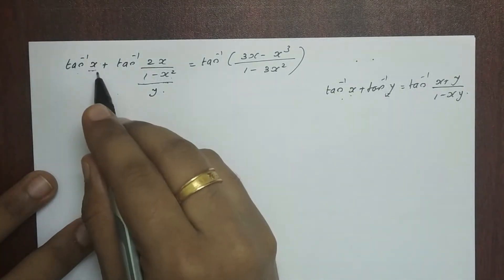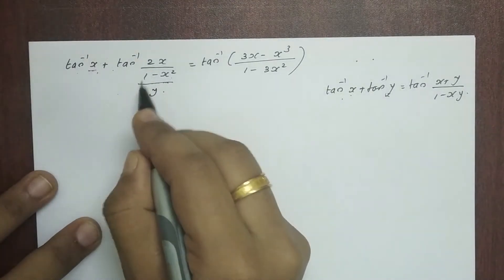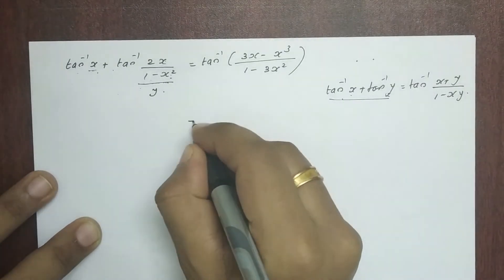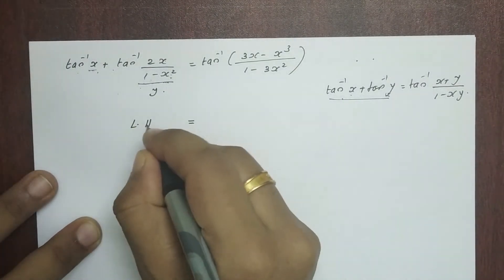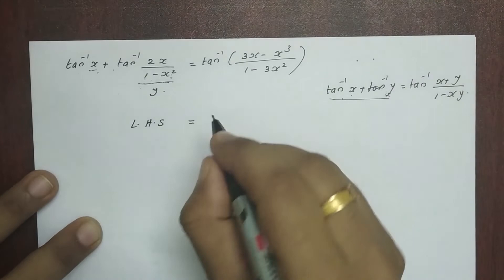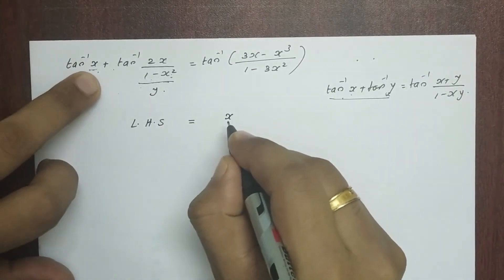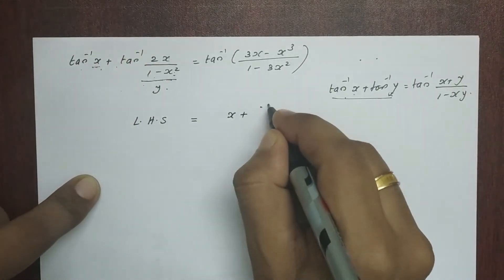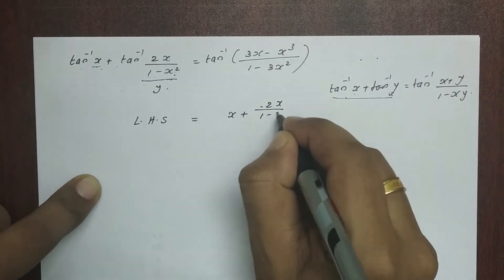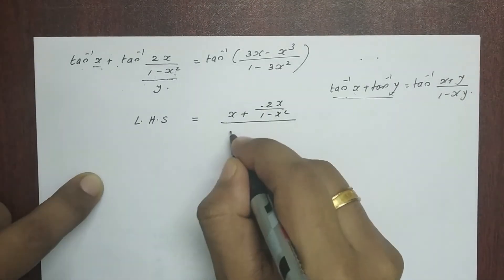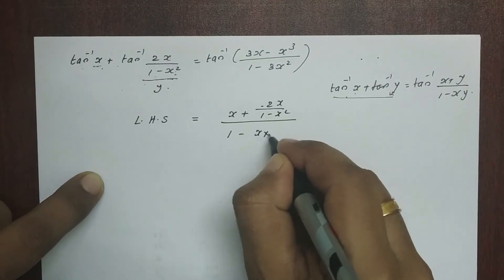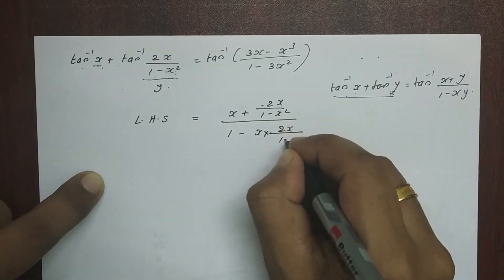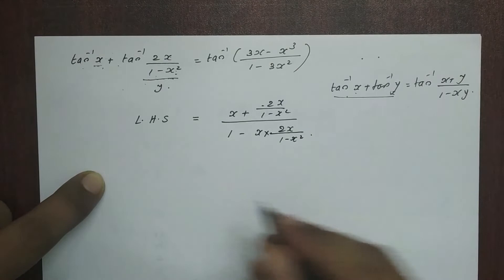That is tan inverse x plus tan inverse 2x divided by 1 minus x squared. This equals LHS equals x plus y equals 2x divided by 1 minus x squared, divided by 1 minus x into 2x divided by 1 minus x squared.